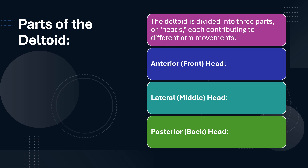You have the lateral head — the middle head — and this part helps lift your arm out to the side, like when you do a jumping jack or a star jump motion.